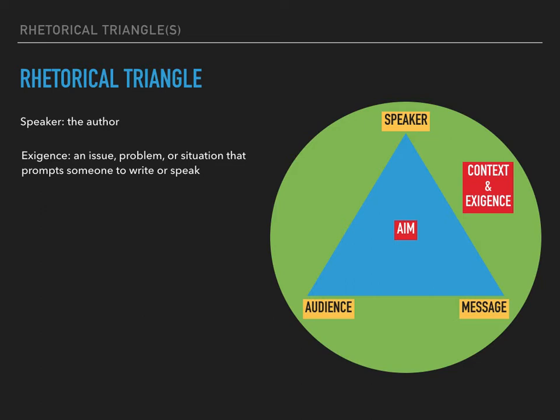The context and exigence are outside of the specific rhetorical triangle. The second corner of the rhetorical triangle is the audience, or in a writing class we might say the readers. It's important to realize that thinking of an audience as singular or monolithic can be misleading. Authors often have multiple audiences in mind and are trying to persuade many different groups. Sometimes they have a primary audience as their focus and a secondary audience in mind as well.